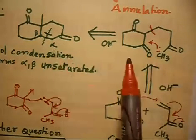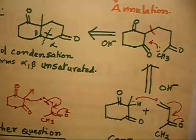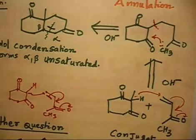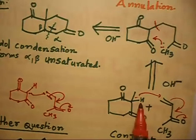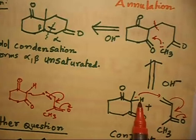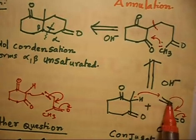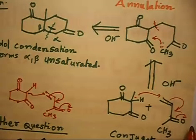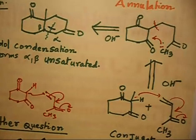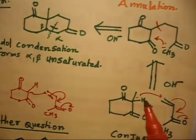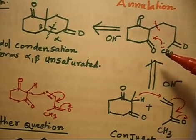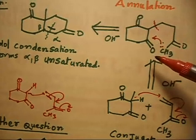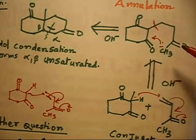Then if you do an aldol reaction you will get an alpha-beta compound, and if you heat you can lose water as H2O. So to summarize: first step, take the two compounds, generate a carbanion, the carbanion attacks, the double bond shifts, and after tautomerization with H+ you get the intermediate. In the next step, take H+ from the alpha position, attack, open up, lose OH as H2O, and you get the final product.